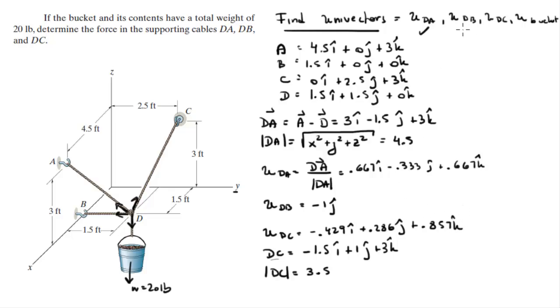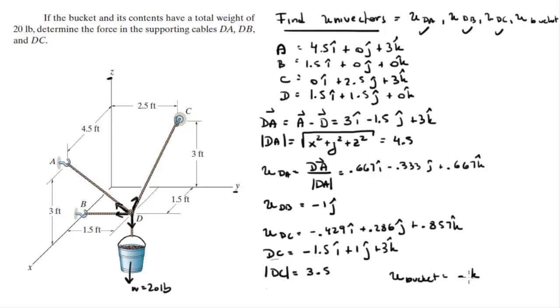Now we have DC, and the unit vector for the bucket is easily found because it's going straight down, which is parallel to the K axis. In other words, it's minus 1k.